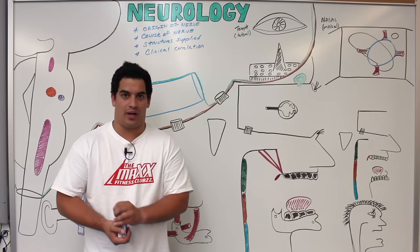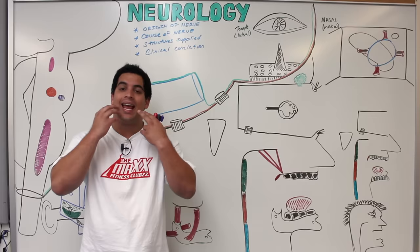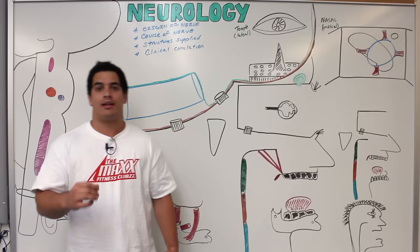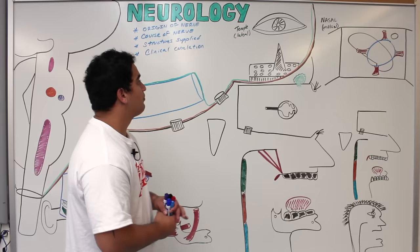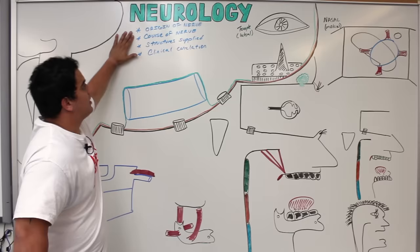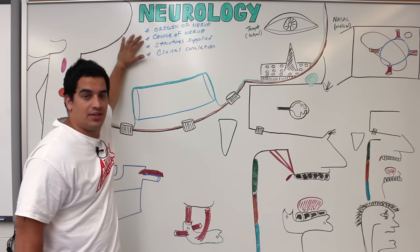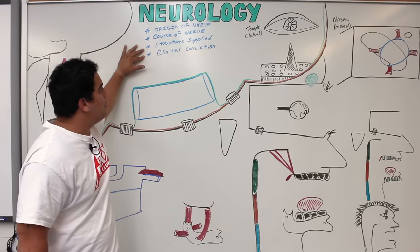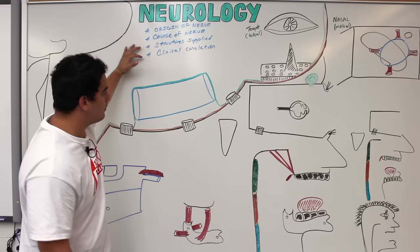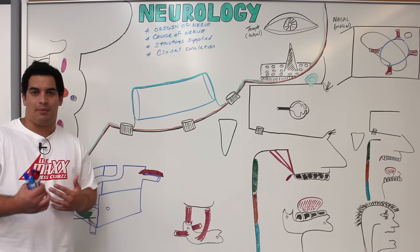In this video we're going to talk about the trigeminal nerve, cranial nerve 5. This is probably one of the most important cranial nerves when it comes to sensations like touch, pain, and temperature of the face, and control of the muscles of mastication. We'll discuss the origin of the nerve in the brainstem, the course and branches, the structures it supplies, and clinical correlation with trigeminal neuralgia.